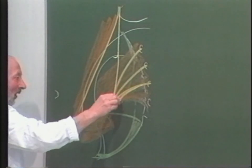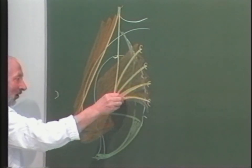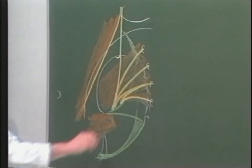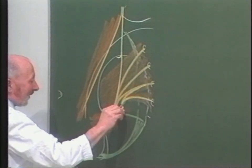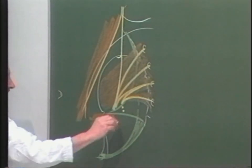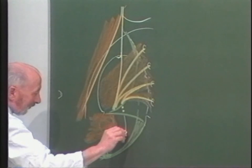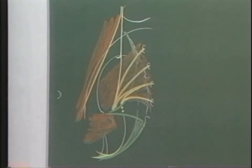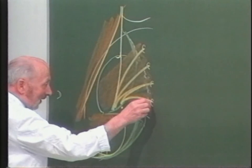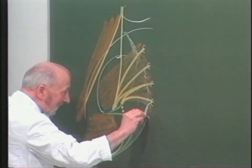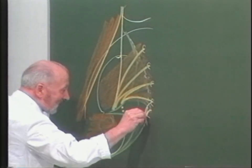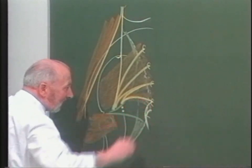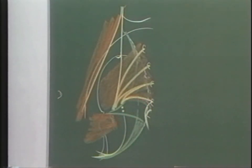Les racines S3 et S4 donnent naissance au nerf pudendal, qui, à peine sorti de la grande échancure sciatique, va repénétrer par la petite échancure et venir assurer l'innervation du pelvis et du plancher périnéal. Les racines sacro-coccygiennes, enfin, vont donner naissance au nerf anal postérieur de Moresta.